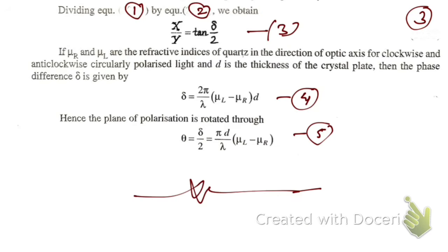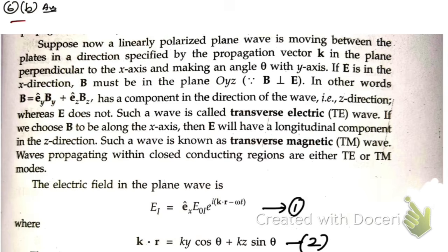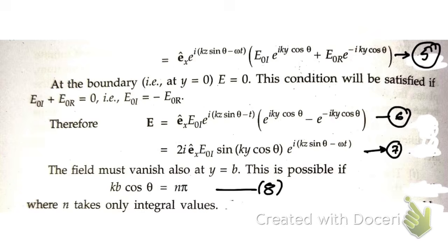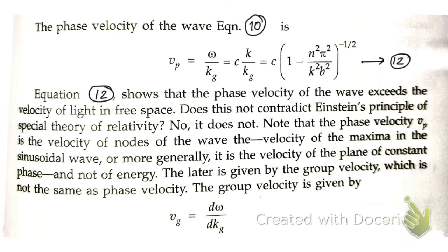The next question is: explain the phase and group velocities of a guided wave. Here is the answer to question 6b. You start from page one, then page two, then the third piece, the fourth piece, and the fifth piece — which is the last one.